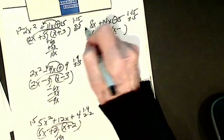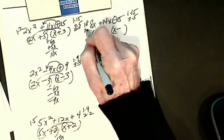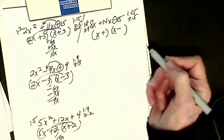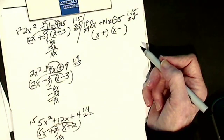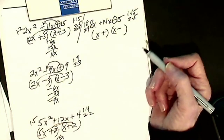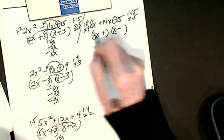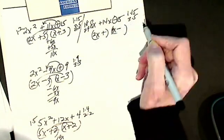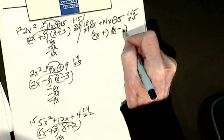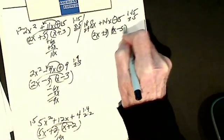8. It's either 1 times 8, or 2 times 4. I have no idea. I'm going to try 2 and 4, and 3 and 5, and see what happens. So I'll put my 2 here, my 4 here. I want my 3 here, my 5 here.